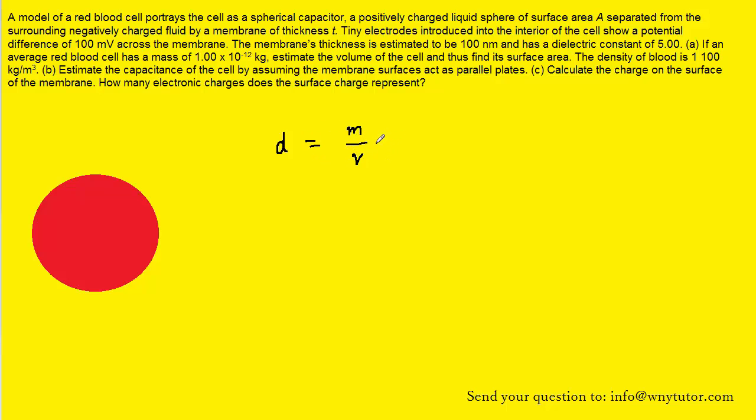To do that, we would multiply both sides of the equation by the volume V. This way it cancels out on the right-hand side. So then we would have volume times density equals mass. And then we can divide both sides of the equation by the density. We can see, therefore, that the volume of this red blood cell can be estimated by its mass divided by its density.